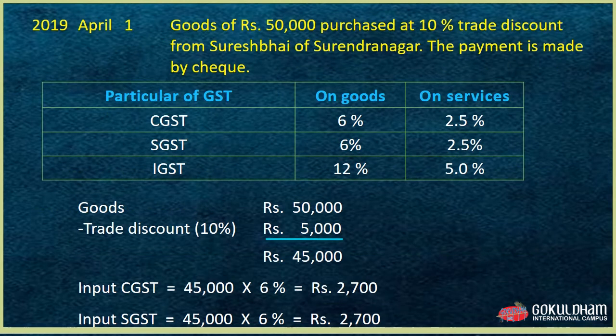Let's start with the first transaction. Goods of ₹50,000 purchased at 10% trade discount from Suresh Indra Dagar. Payment is made by cheque. The business is in Gujarat and Suresh Indra Dagar is also in Gujarat, so this is an intra-state transaction.